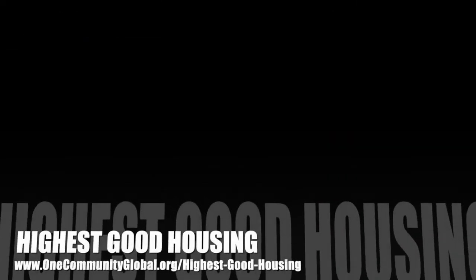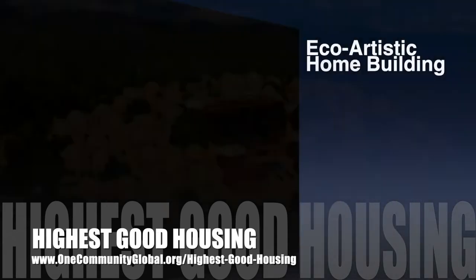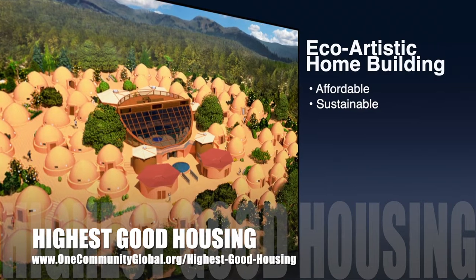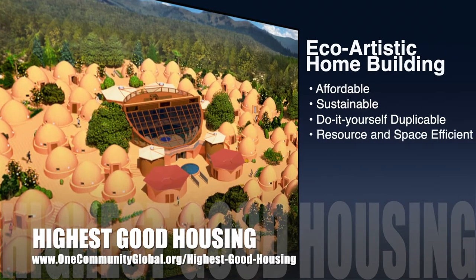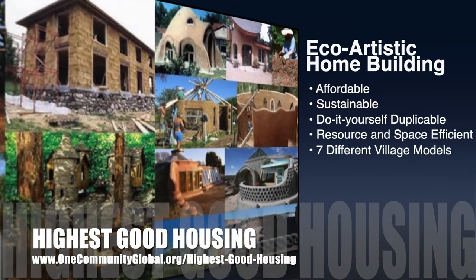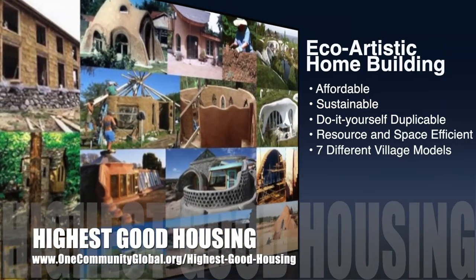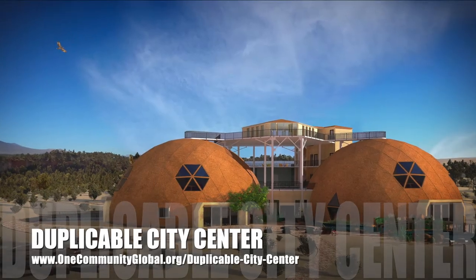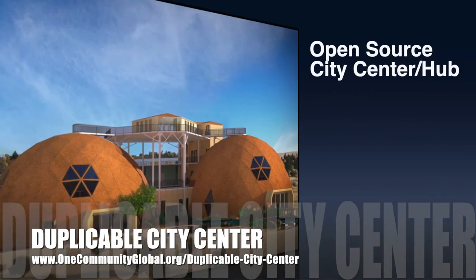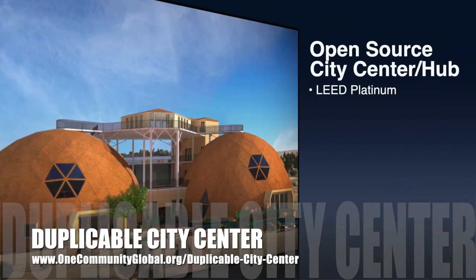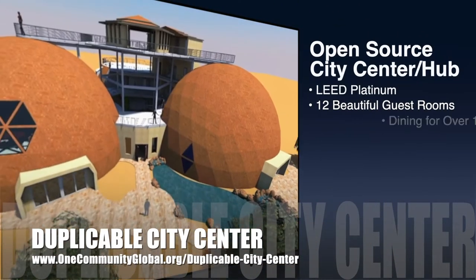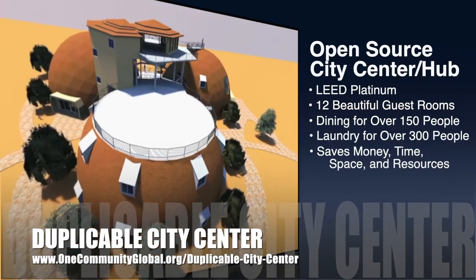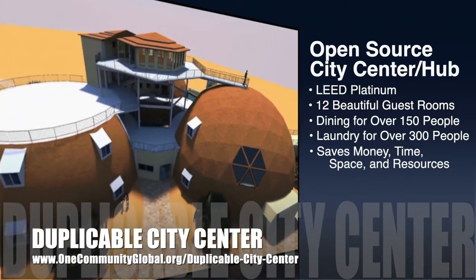The One Community approach to Highest Good Housing is eco-artistic home building that is affordable, sustainable, do-it-yourself duplicable, resource and space efficient, and consists of seven different sustainably constructed village models. One Community is also creating an open source duplicable city center designed to be LEED Platinum certified, provide 12 guest rooms, dining for over 150 people, and laundry and recreation space for over 300 people, all while saving money, time, space, and resources.